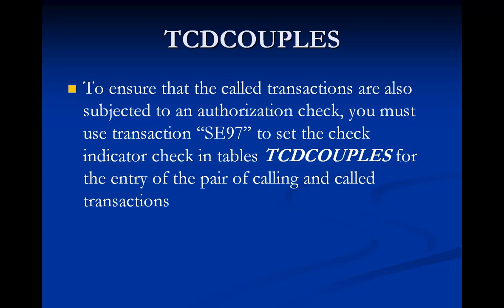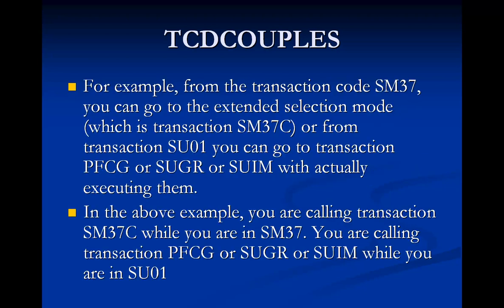Using AC97, you pair the calling transaction codes and the called transaction codes. For example, from transaction code SM37, when you go to SM37 you have an Extended Selection button on the screen. When you click on that, the system actually calls transaction SM37C.